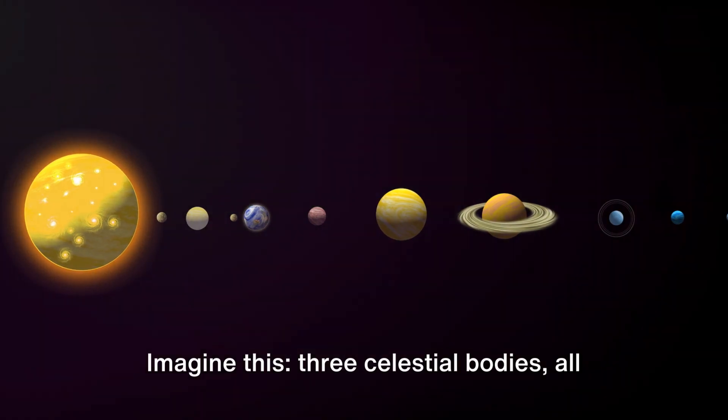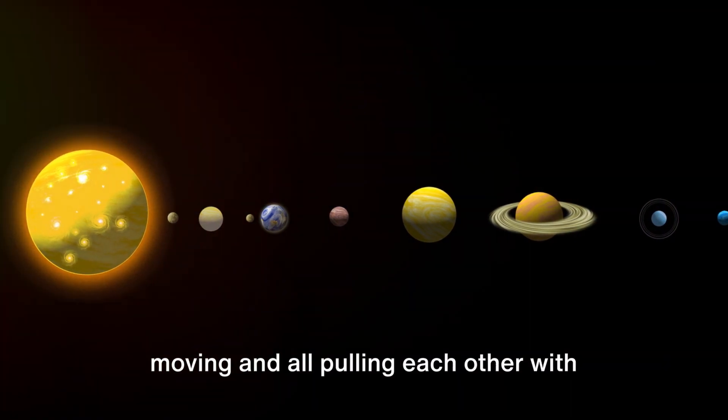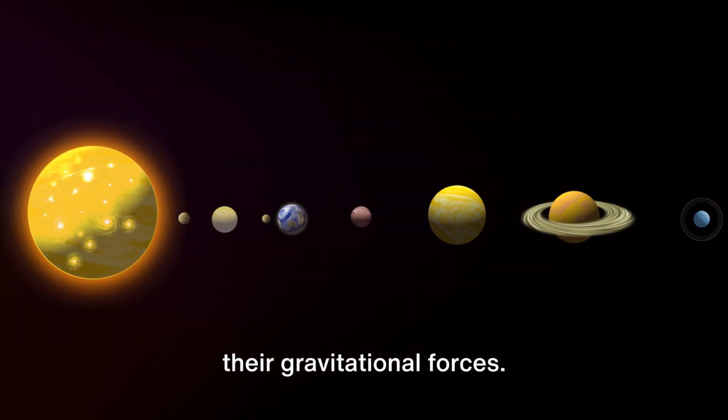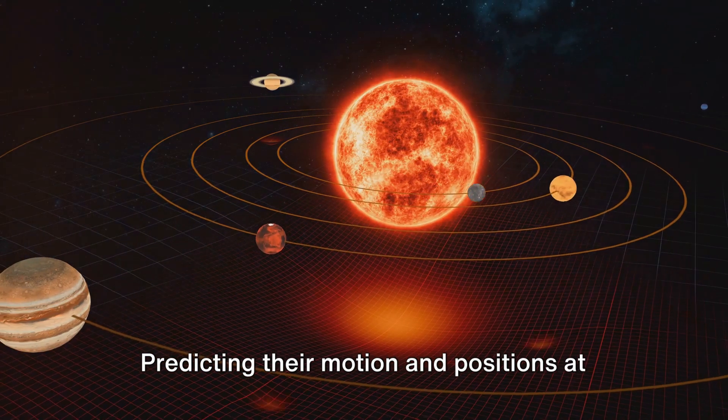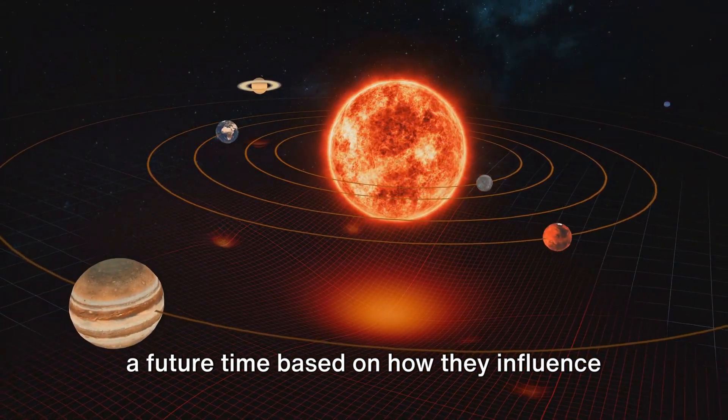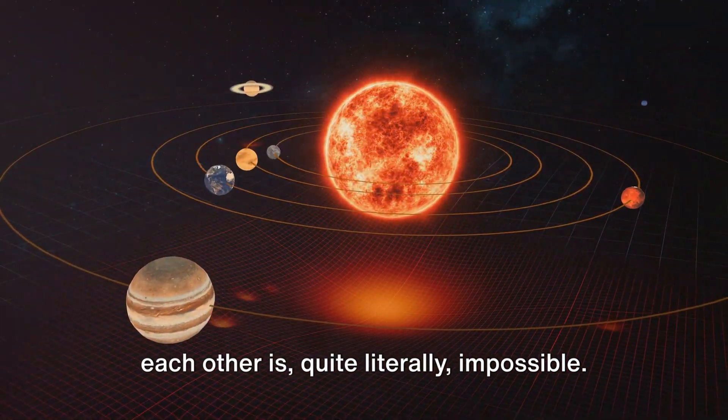Imagine this: three celestial bodies, all moving and all pulling each other with their gravitational forces. Predicting their motion and positions at a future time based on how they influence each other is, quite literally, impossible.